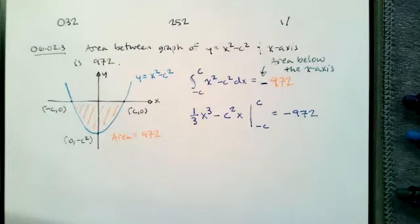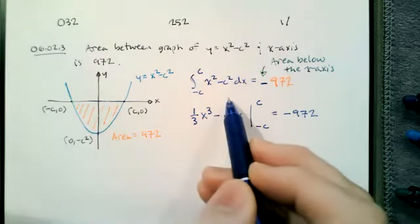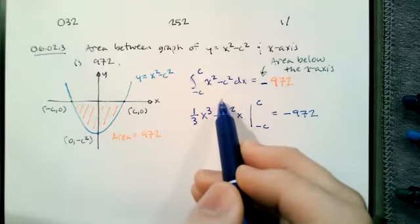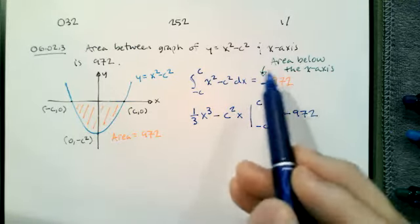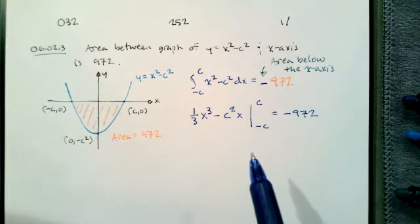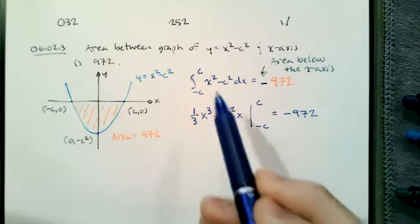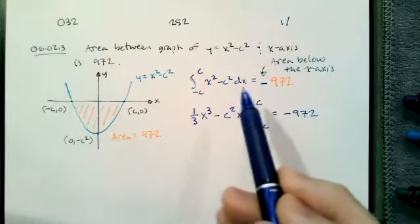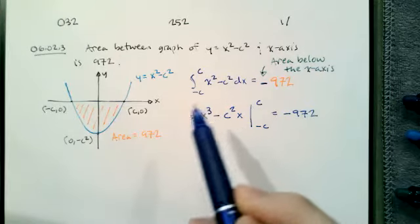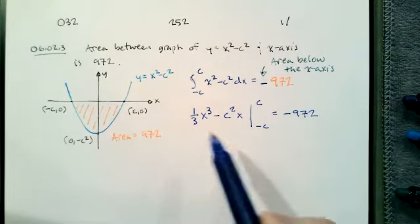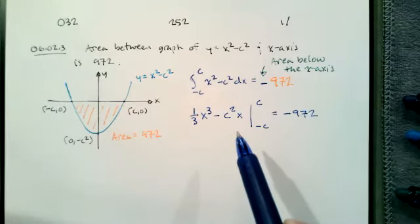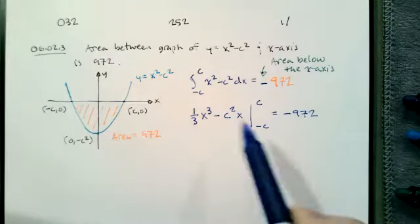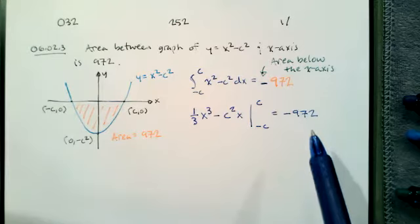So that's the first part: recognizing that the area will be given by a definite integral. Second, notice that the area is below the x-axis, so the integral will call it negative area. Then we move on to solving using the fundamental theorem of calculus by finding an antiderivative. Now we just have to do some algebra to solve the equation.